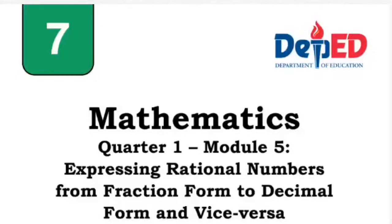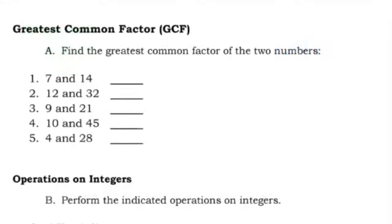For this video, I'm going to discuss Math 7, Quarter 1, Module 5: expressing rational numbers from fraction form to decimal form and vice versa. Under 'What's In,' we have the greatest common factor or GCF — find the greatest common factor of two numbers.